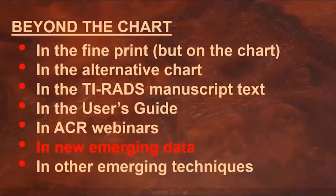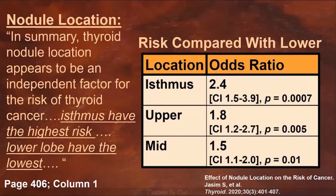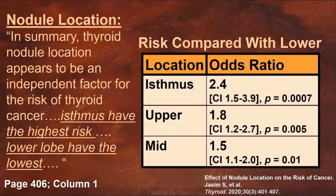I want to talk about some new emerging data. There are a number of papers that have re-evaluated the five TI-RADS features and some that have even suggested new features. One of the new features is location. A study of more than 3,000 nodules found that location was an independent risk factor for thyroid malignancy. The highest risk location was the isthmus with an odds ratio of 2.4 when compared to the lower pole, which had the lowest risk of malignancy.